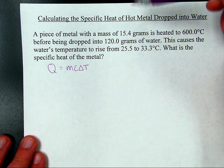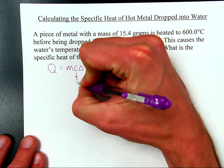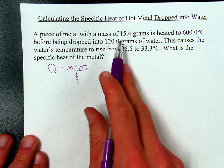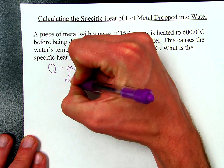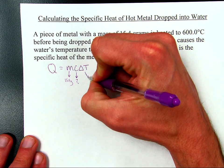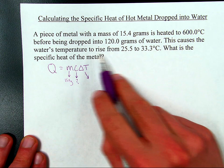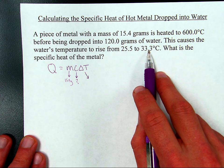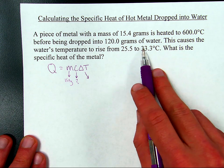If we're trying to find the specific heat of the metal, everything else in this equation needs to be for the metal. So the mass of the metal is right here, 15.4 grams, delta T for the metal, we can figure that one out. The metal started at 600 degrees, the metal's final temperature is the same as the water's final temperature. If you take red hot metal and put it into water, after a brief sizzle, they'll both wind up being at the same temperature.